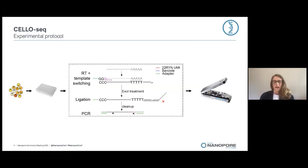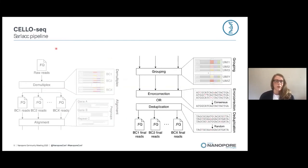We then amplify the first strand cDNA via PCR and then produce genomic DNA libraries to sequence on a Minion flow cell. We have developed a pipeline called SALAC to analyze our CELO-SEEK data. We first demultiplex our reads and then we align the reads to the transcriptome as well as to the transposable elements.